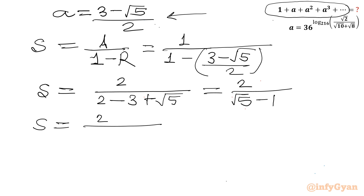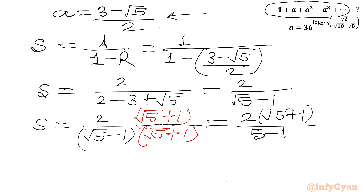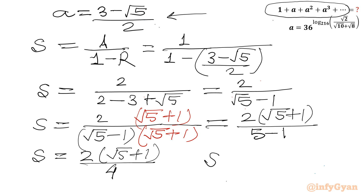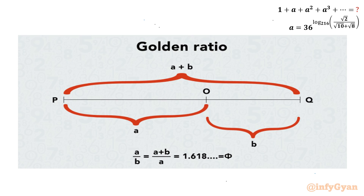Now I will rationalize the denominator (√5 − 1) by multiplying numerator and denominator by (√5 + 1). The denominator becomes the difference of squares: 5 − 1 = 4. So S = 2(√5 + 1) / 4 = (√5 + 1) / 2. This is the divine result — the golden ratio! The golden ratio is defined as A/B = (A + B)/A = (√5 + 1)/2.